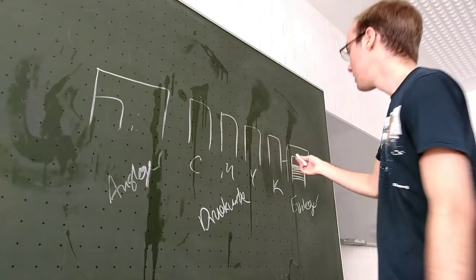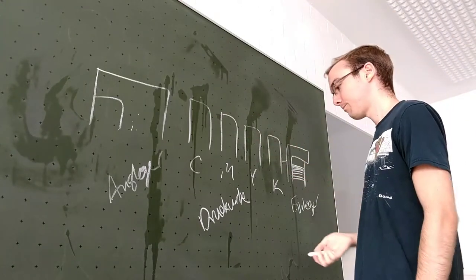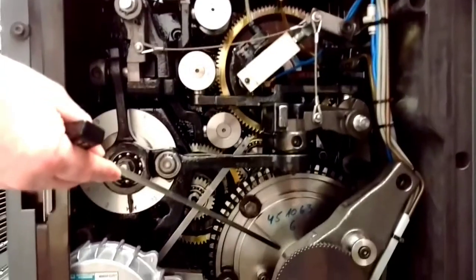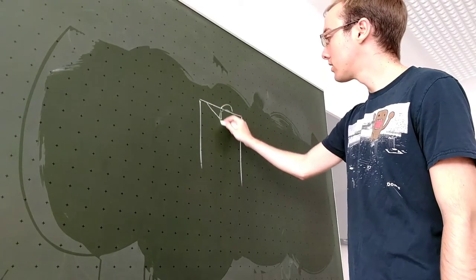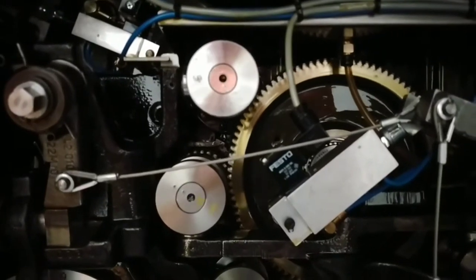And inside of these Druckwerke, you have, say this is one Druckwerk. You'll have like this up here, which is like the color. This is where the color goes in. This is at the top of the machine that you'll see.